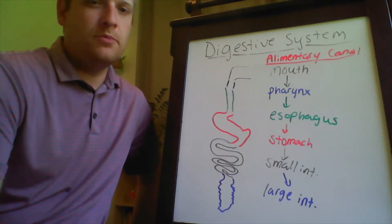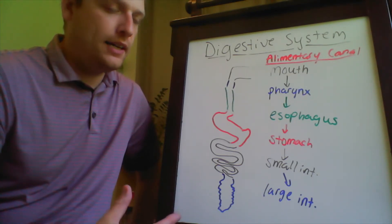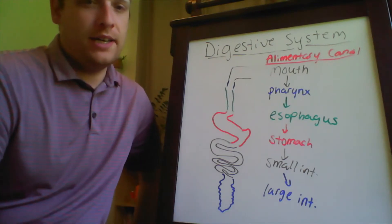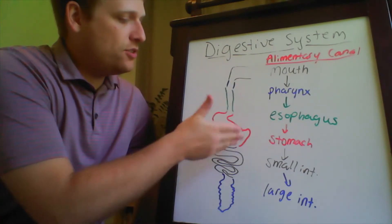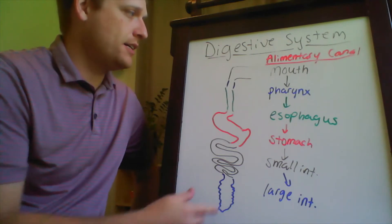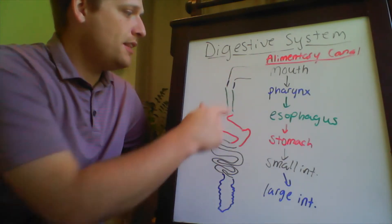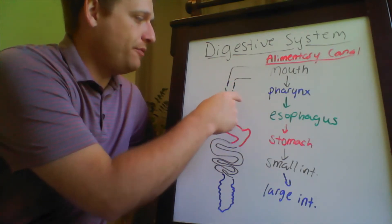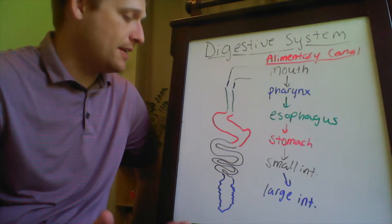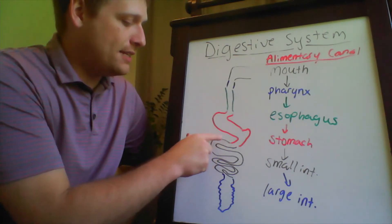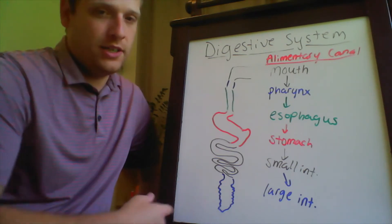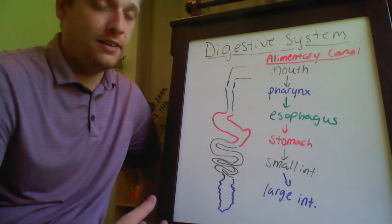In the digestive system, you have two basic types of organs. The first, which you're probably most familiar with, are the organs of the alimentary canal — a continuous tube-like structure that runs from your mouth to the anus. In order, the alimentary canal consists of the mouth, the pharynx (responsible for swallowing reflexes), the esophagus (transporting food to the stomach), the stomach (where mechanical and enzymatic digestion occur), the small intestine (primarily for nutrient absorption), the large intestine (where some absorption takes place), and finally excretion.